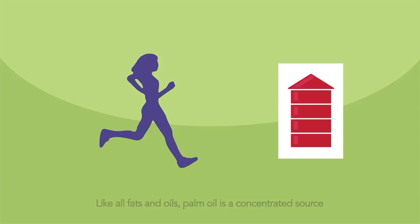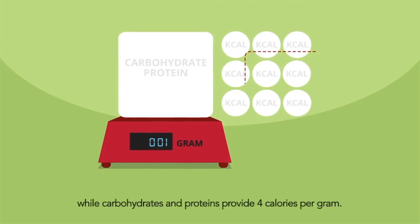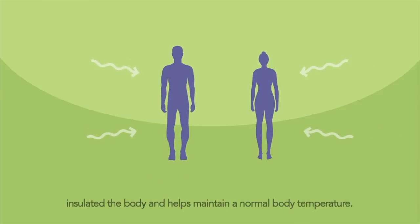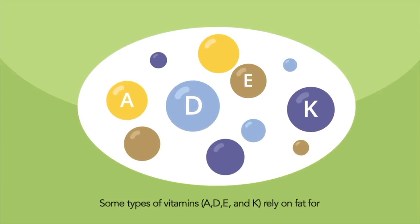Like all fats and oils, palm oil is a concentrated source of energy for our body. One gram of fat provides 9 calories, while carbohydrates and proteins provide 4 calories per gram. Fats are structural components of cell membranes and hormones. Fat also cushions our organs during movement, insulates the body and helps maintain a normal body temperature. Some types of vitamins — A, D, E and K — rely on fat for absorption and storage.